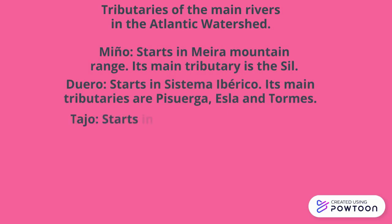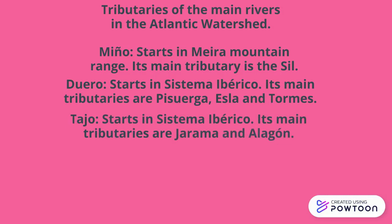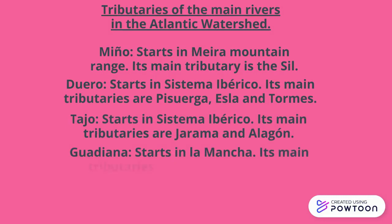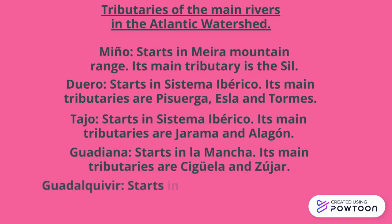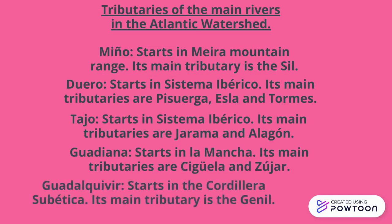Tajo starts in the Sistema Ibérico; its main tributaries are Jarama and Alagón. Guadiana starts in La Mancha; its main tributaries are Zújar and Zujar. And finally, Guadalquivir starts in the Cordillera Subbética; its main tributary is the Genil.